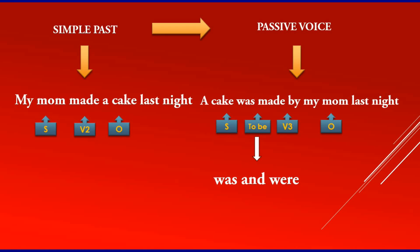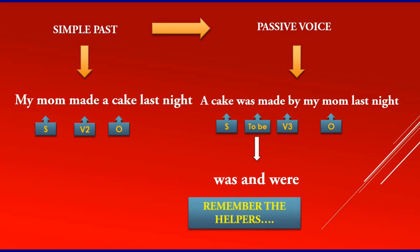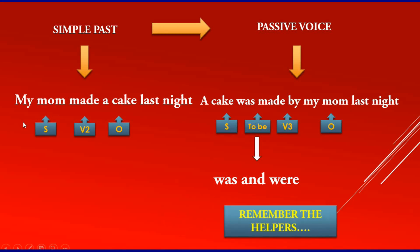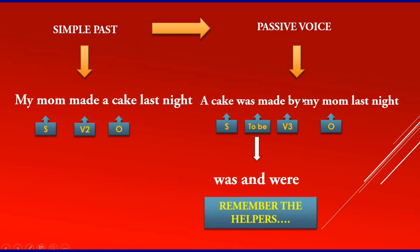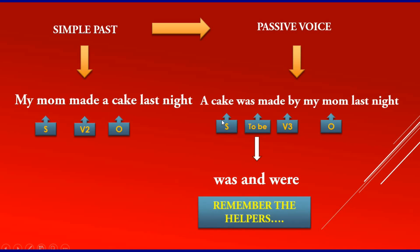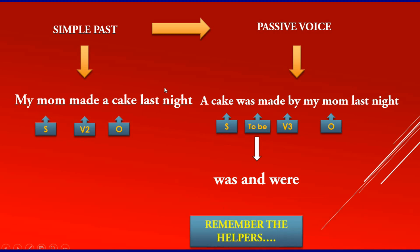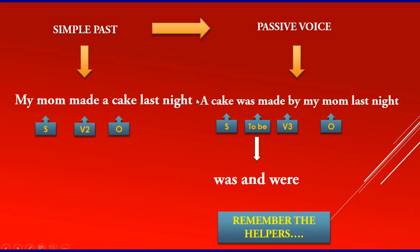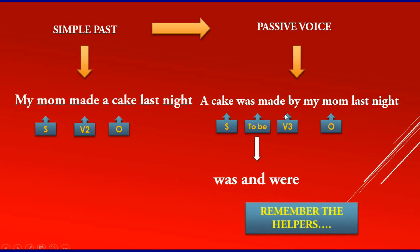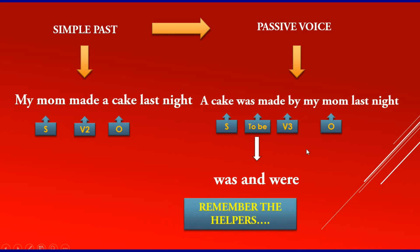In simple present we had are, am, is — but in simple past, we have was and were. The rule is the same: change the position, subject becomes object, object becomes subject. Then add the to-be — was or were — then use verb 3, then add the object. Let's practice!